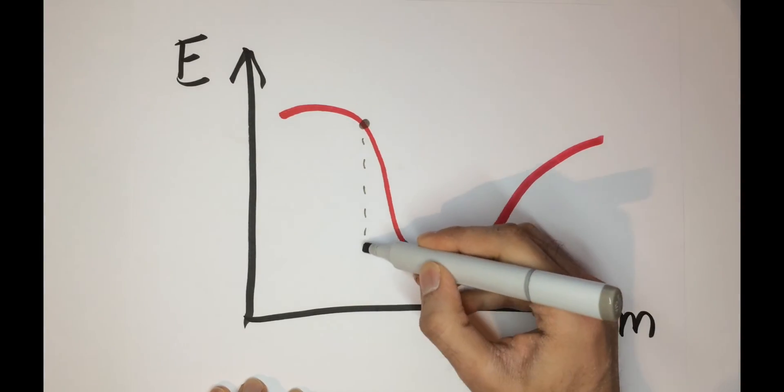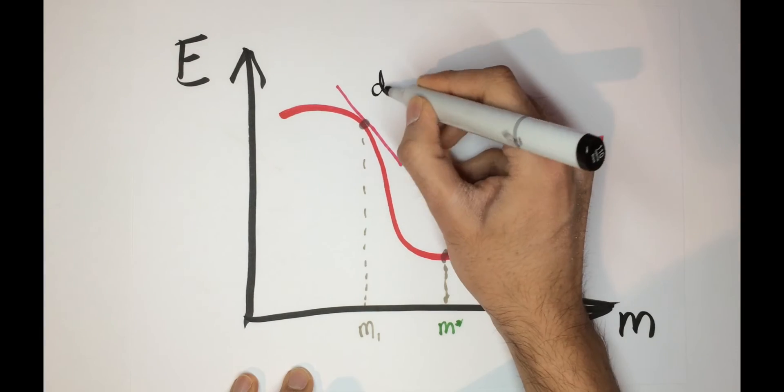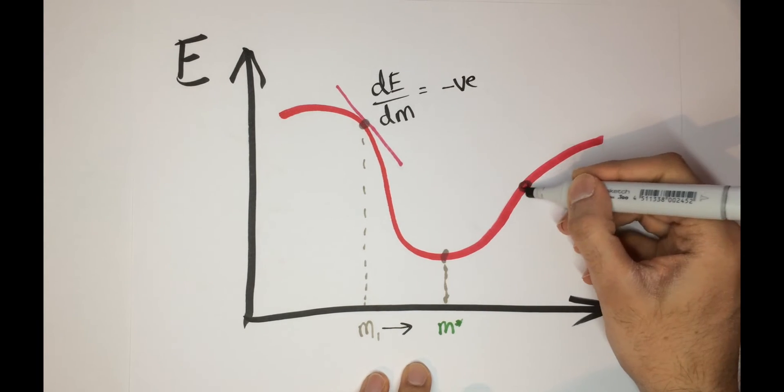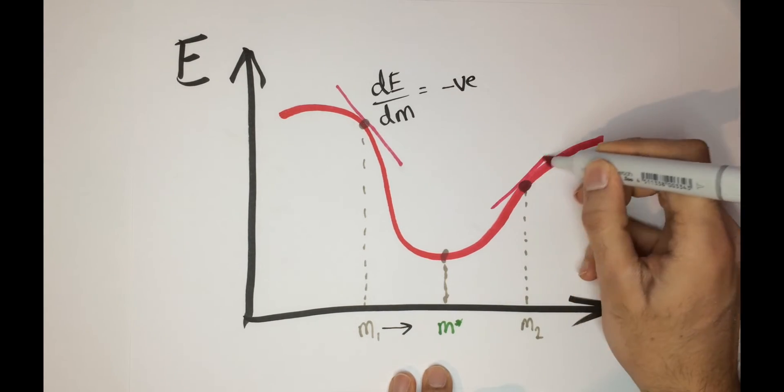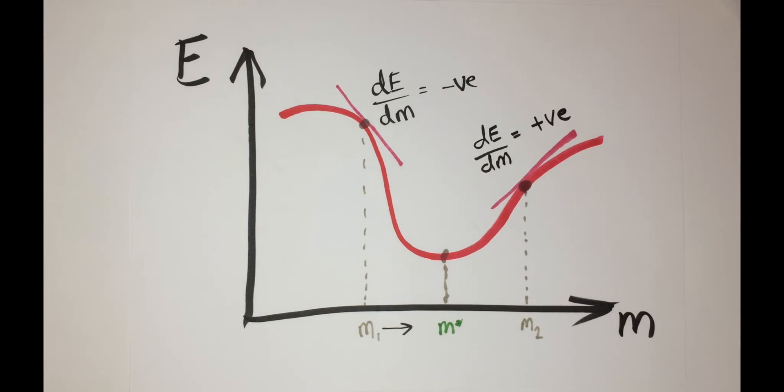So let's say our m value is here on the left of the optimal point. This would give us a negative gradient for the error. And we would want to increase m to the optimal value. Same way if m was on the other side, the gradient would actually be positive. So subtracting the positive gradient would take us closer to the optimal value of m. So this process is known as gradient descent.